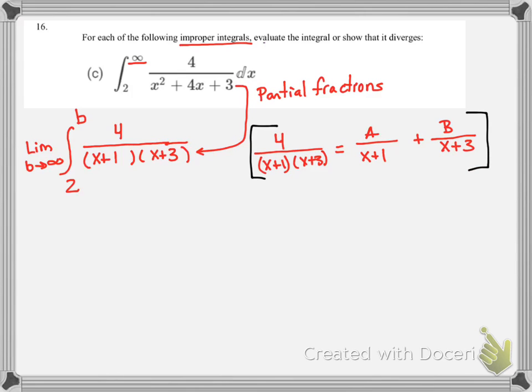And in order to do that, we can get rid of our fractions by multiplying the numerator and the denominator by x plus 1, x plus 3. And what we result in is 4 equals A times x plus 3 plus B times x plus 1.